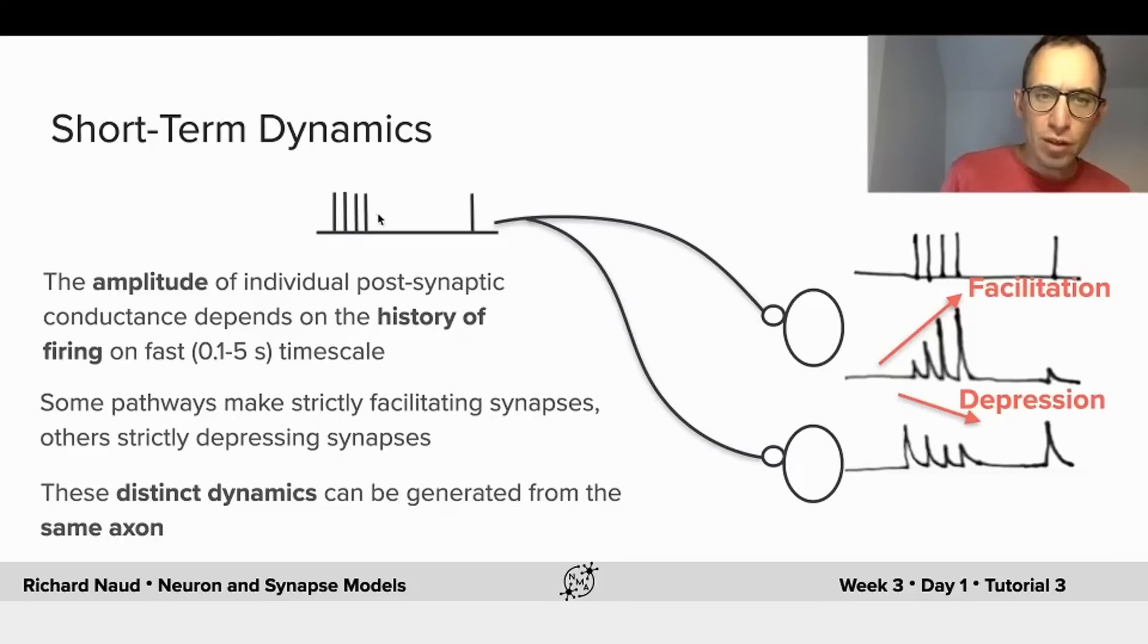When a train of action potentials is coming through an axon, some synapses will have the amplitude of the excitatory postsynaptic currents increasing. This change of amplitude as a function of the history of firing is called short-term dynamics. It's not considered to be a type of plasticity per se, at least not one that would contribute to learning and memory, mainly because if you wait not so long of a time, the amplitude will be the same as at the beginning, so the effect of the history is short-lived.